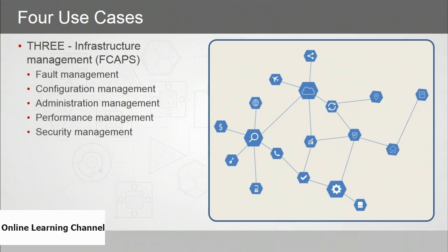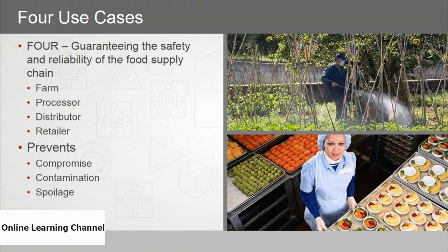The third use case is infrastructure management, using the FCAPS model — Fault, Configuration, Accounting, Performance, and Security — distributing these capabilities across multiple administrative domains including transportation, energy, water, and other infrastructure. The fourth is guaranteeing the safety and reliability of the food supply chain — tracking exactly when and where items were at any point, from farm to processor to distributor to retailer. By using blockchain to secure the food supply chain, we can prevent compromise, contamination, and spoilage.